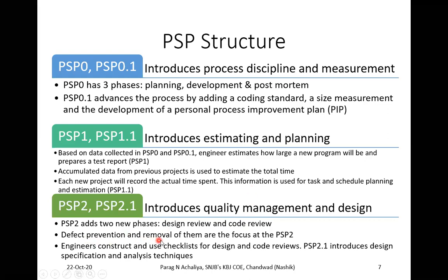In PSP 2, defect prevention and removal are the focus — that is, error finding, defect prevention, and defect removal — all directed toward quality management. Engineers construct and use checklists for design and code review. Whoever is the engineer assigned to the project will create various checklists based on what exactly needs to be checked in the design and code.